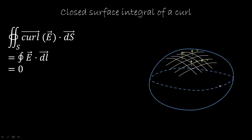Another way to see this is that we can divide the closed surface integral into two parts: the top part and the bottom part. We are taking the same boundary, one in one direction and one in the other, so they cancel out and we still get zero. The result is that the closed surface integral of the curl is zero along any surface and for any vector field.